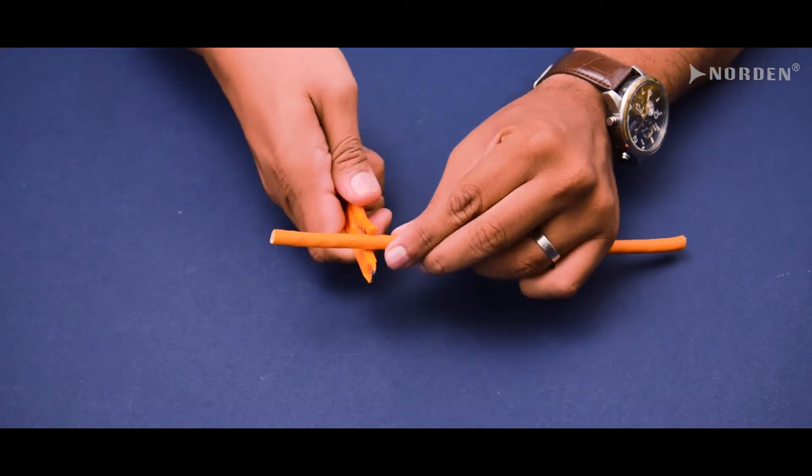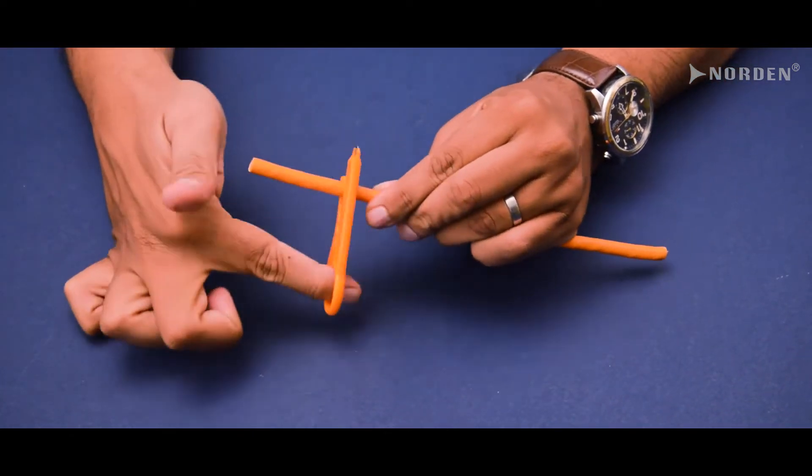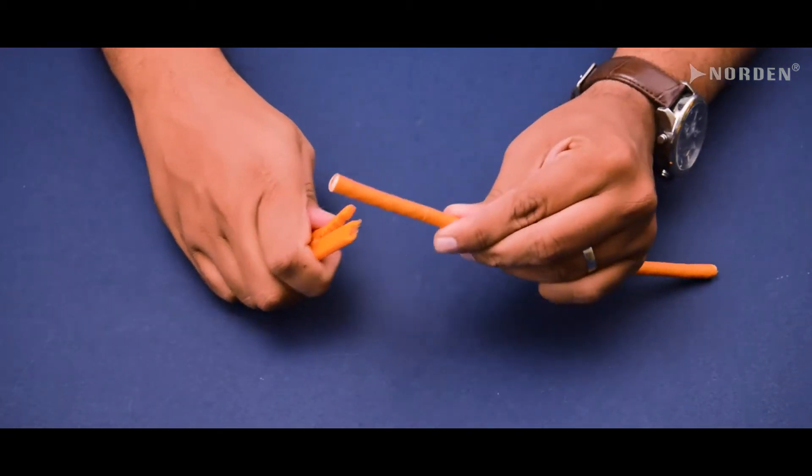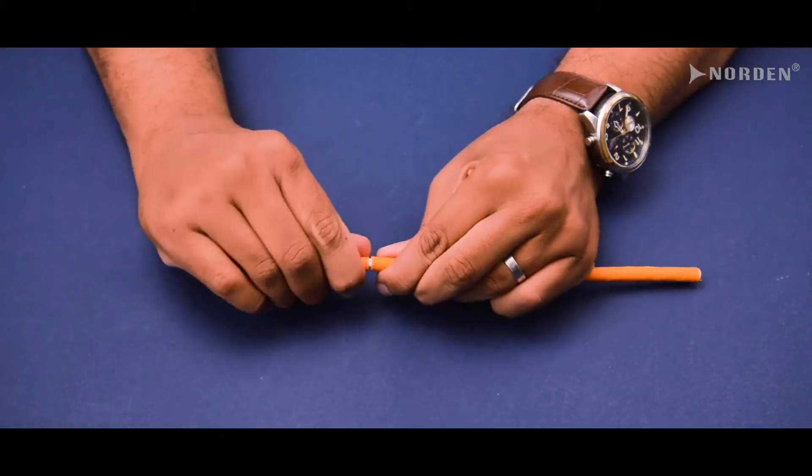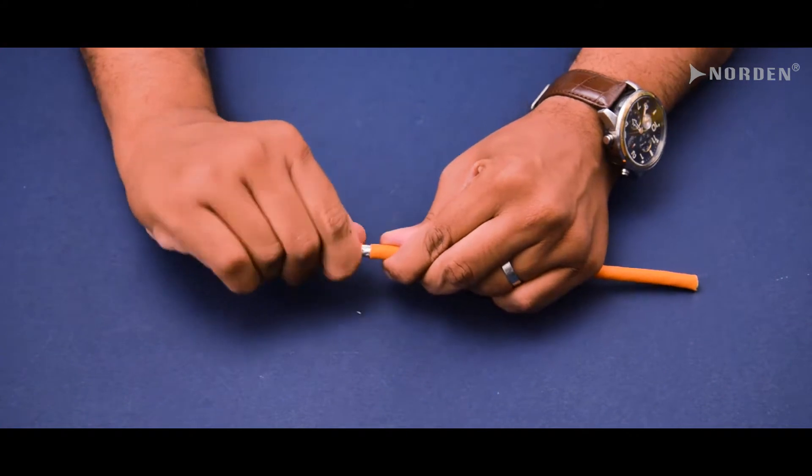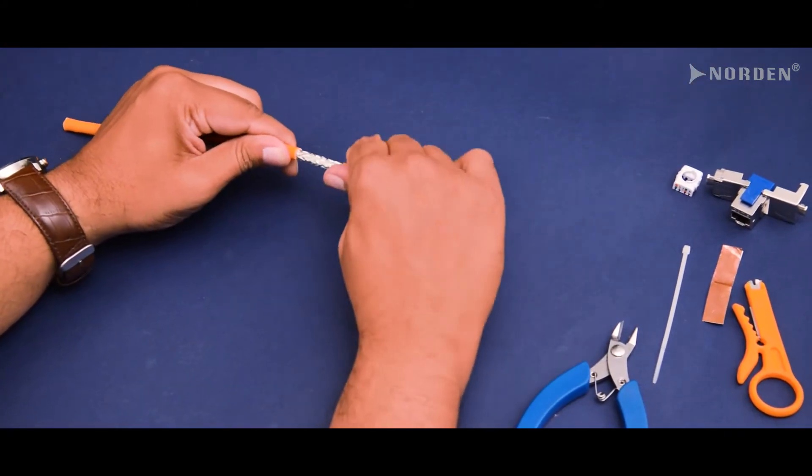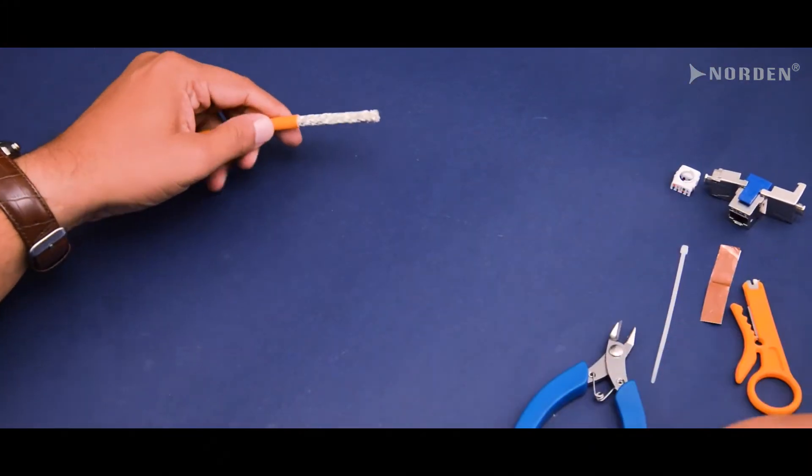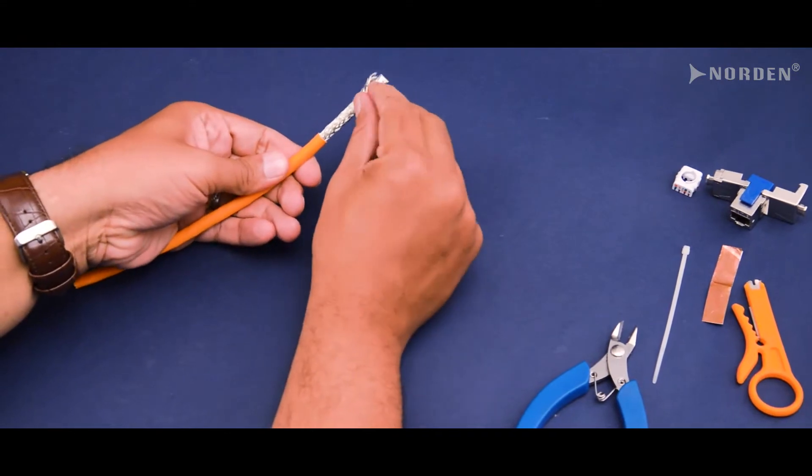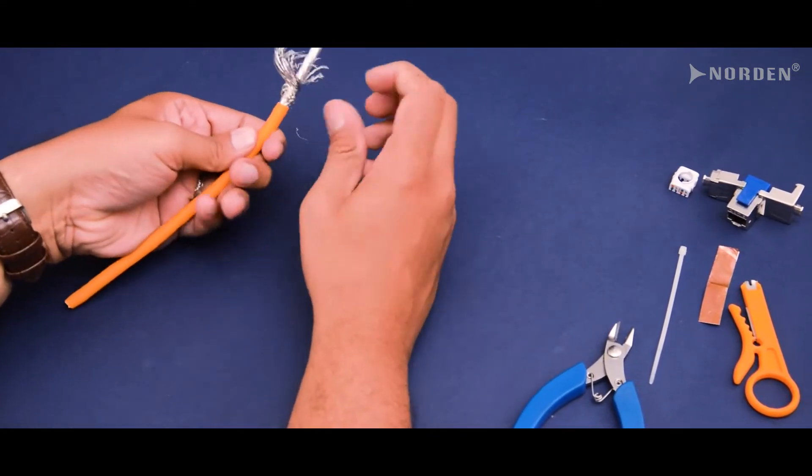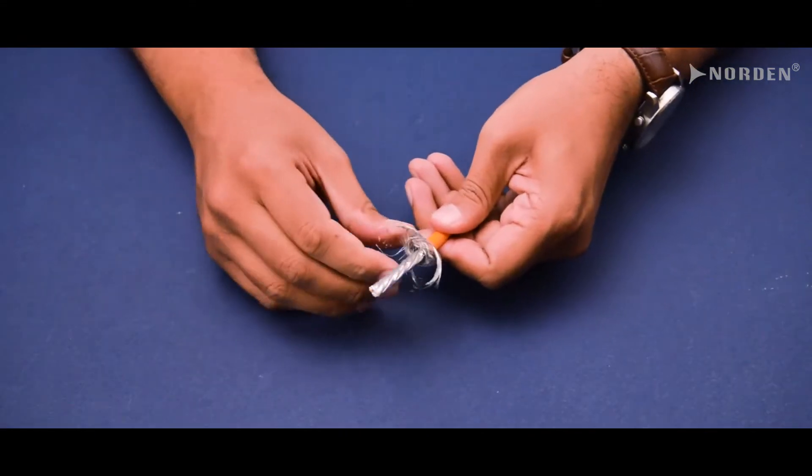Using the cable jacket stripper, remove the cable jacket approximately one and a half inches. Once complete, pull down the braid shielding wire like this and then twist the small portion of the braid wire around the cable jacket.